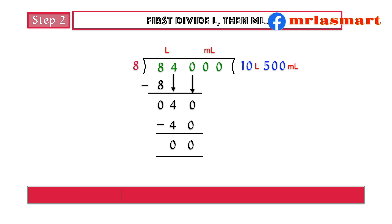Hence, 84 liters divided by 8 equals 10 liters 500 milliliters.